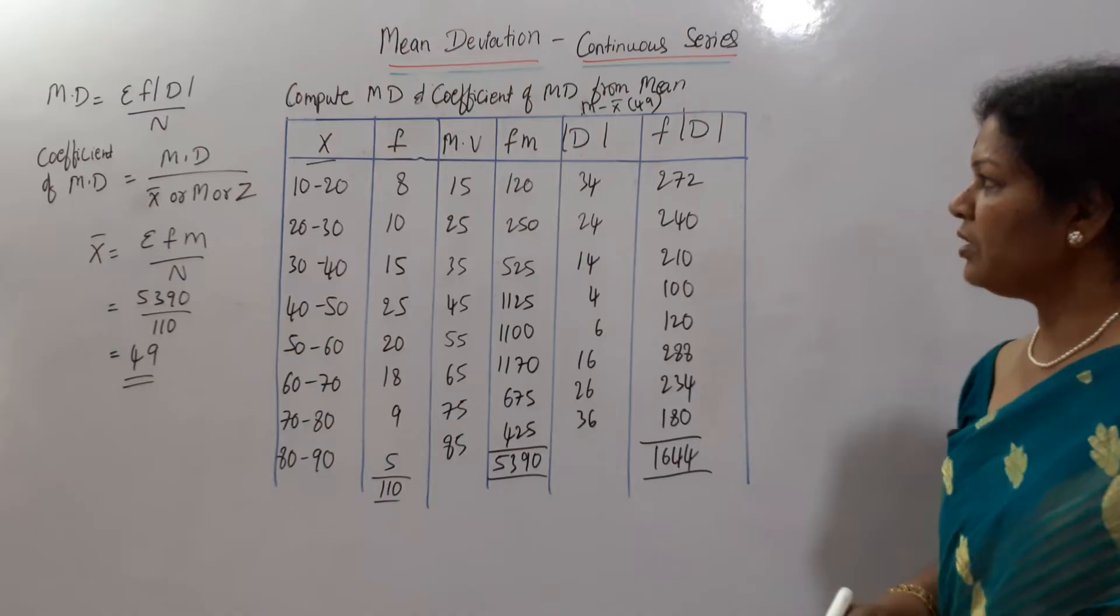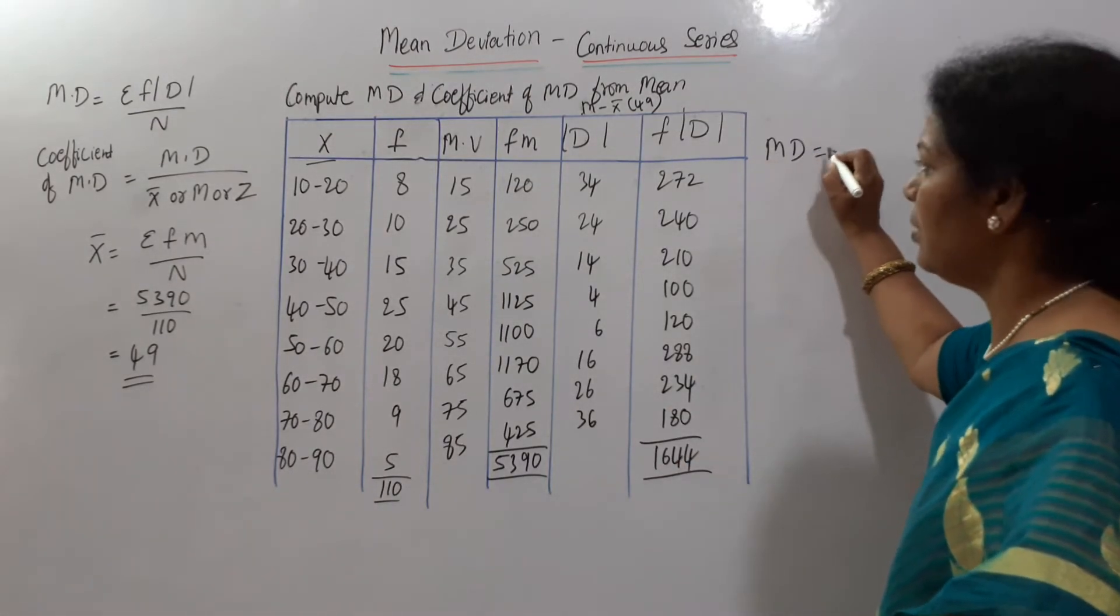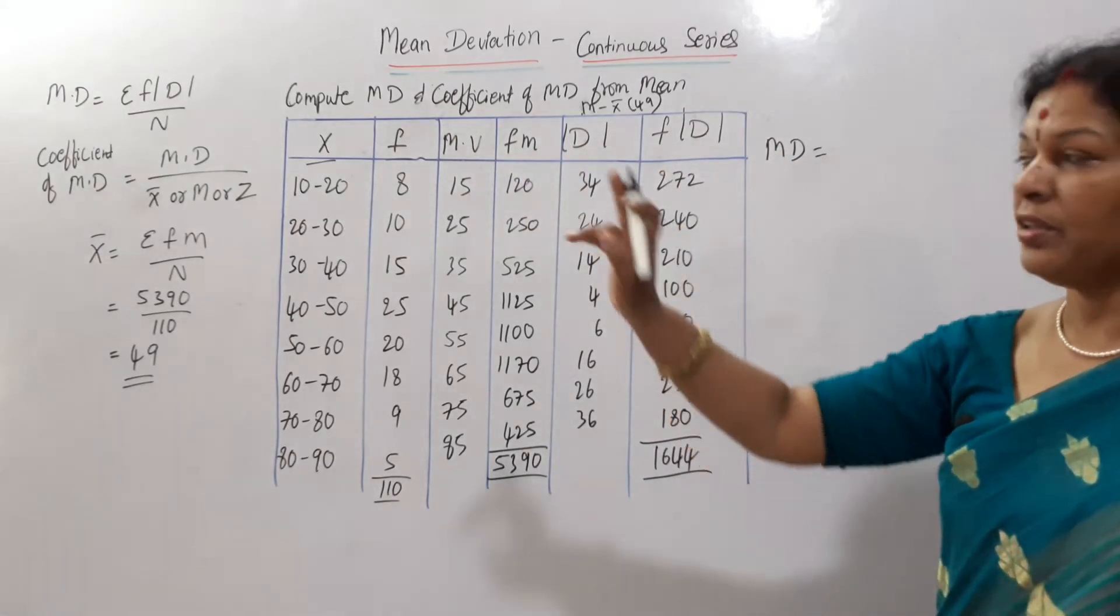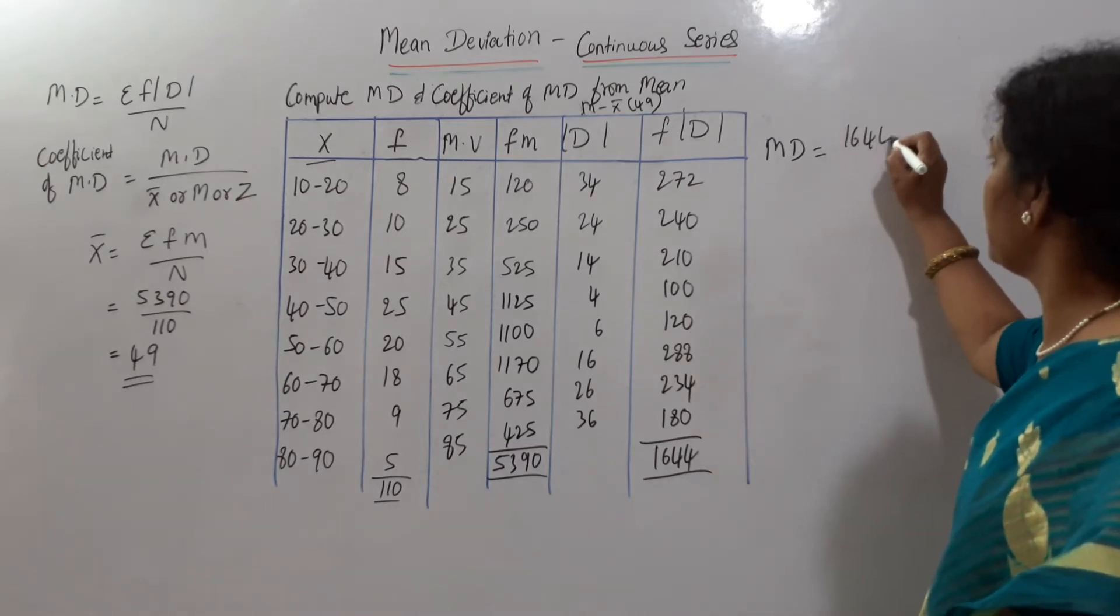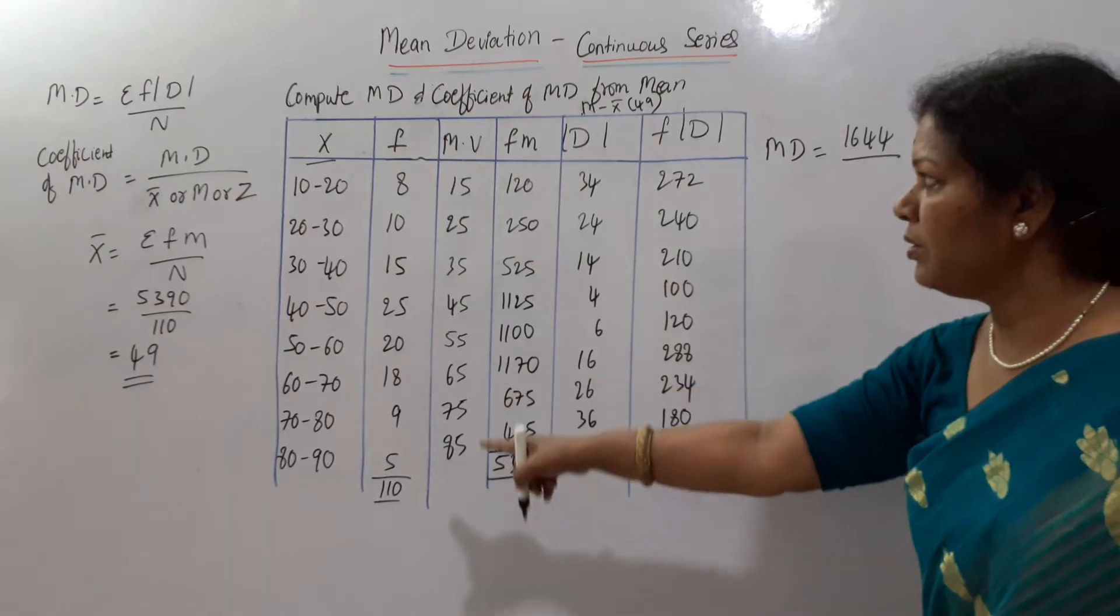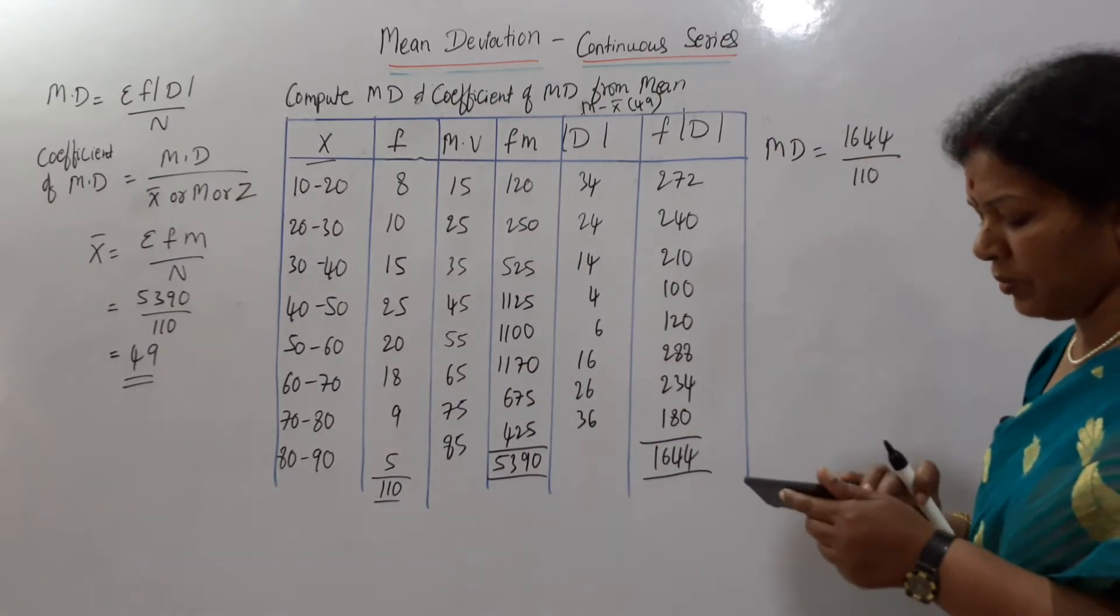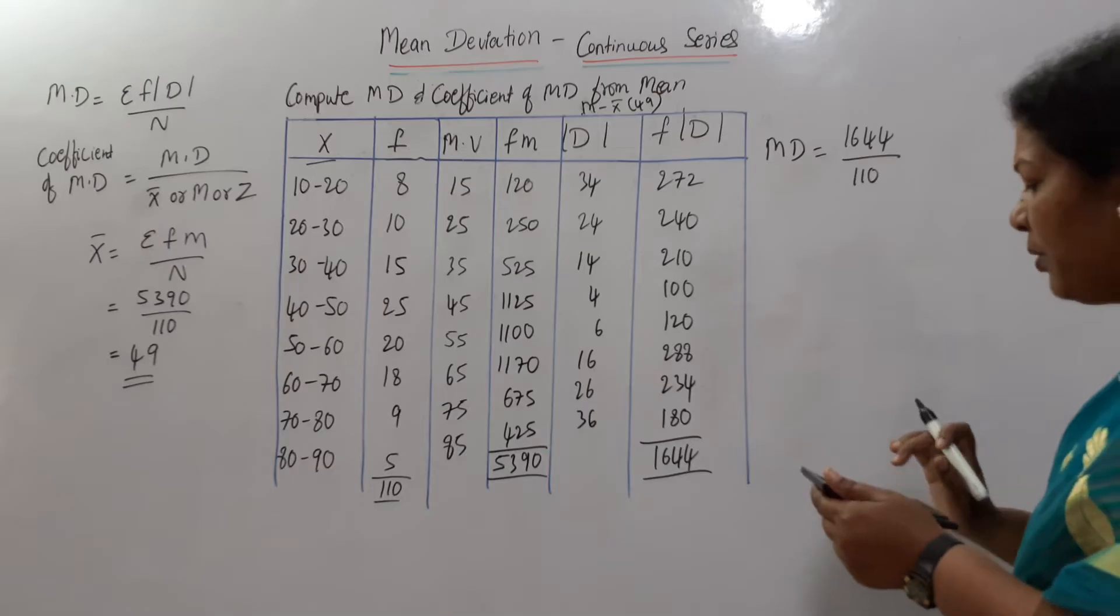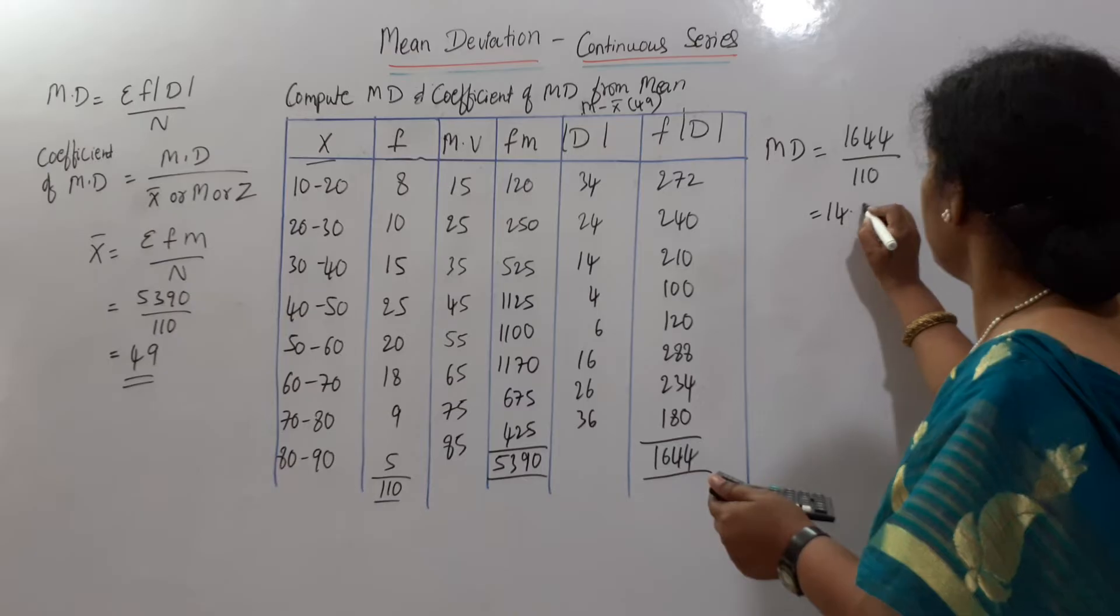Once if you get, simply you can calculate mod D. Mean deviation is equal to, you know the formula. You have to write the formula always. Remember. Sigma f into mod D. Sigma f into mod D is 1644 divided by number of observations, that is 110. 1644 divided by 110. It comes to 14.95.